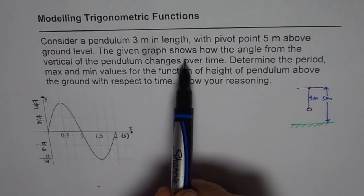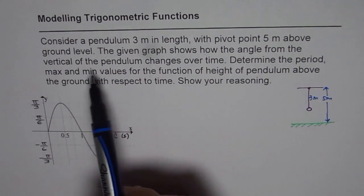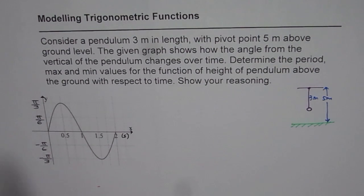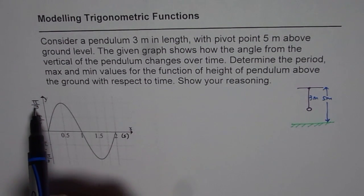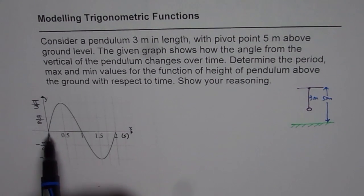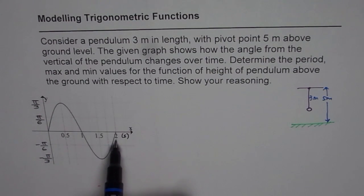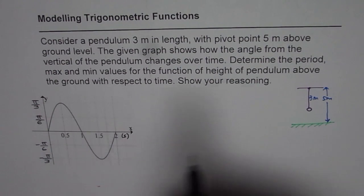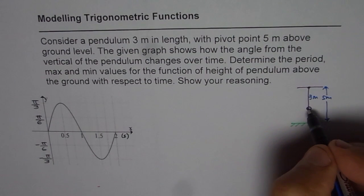The given graph shows how the angle from the vertical of the pendulum changes over time. So the graph here, that's the angle. So pi by six, pi by three - it goes maximum pi by three, and that's the time period which seems to be two seconds. So basically what is happening here is that the pendulum will move like this.